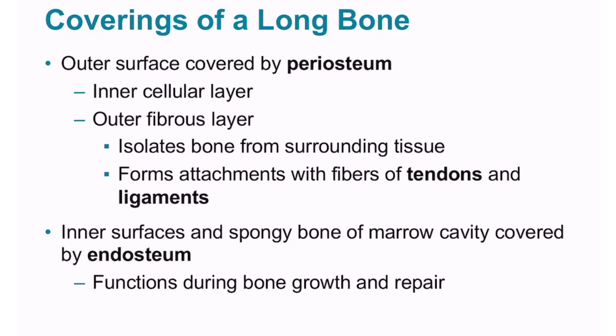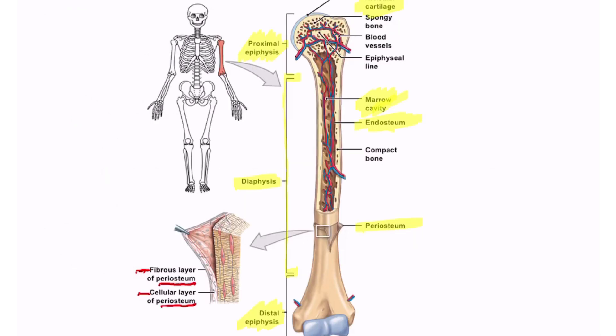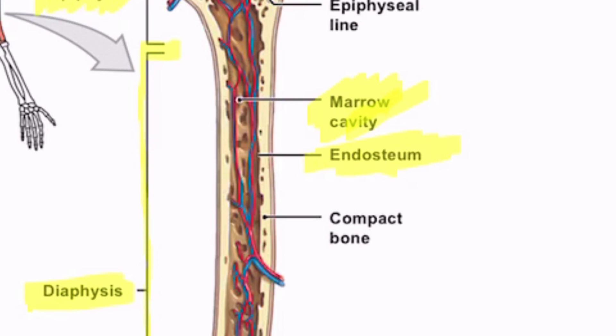The inner surface of the marrow cavity is covered by an endosteum, which functions during bone growth and repair. Within the bone, a cellular endosteum covers the spongy bone of the marrow cavity and other inner surfaces, and is active during bone growth and during repair or remodeling.